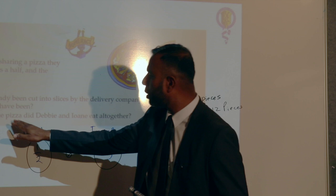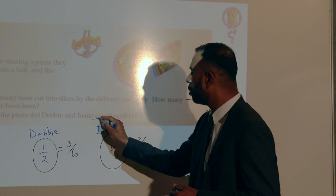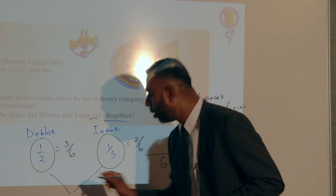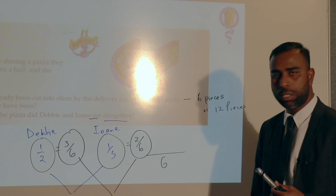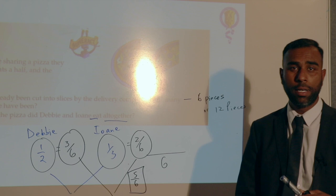What fraction of the pizza did Debbie and Ioni eat altogether? That means we have to add the two fractions: half plus one third. You can only add if they have the same denominator, so that's 3 sixths plus 2 sixths, which makes it 5 sixths. That is your final answer for that.